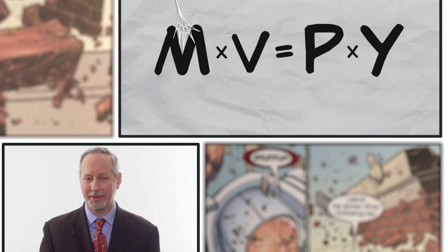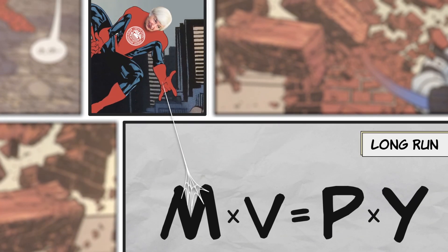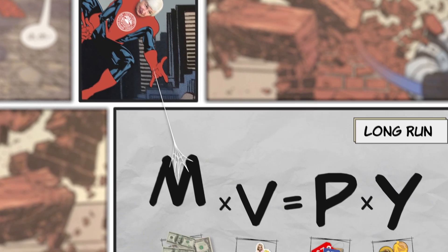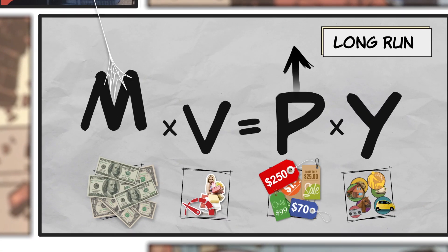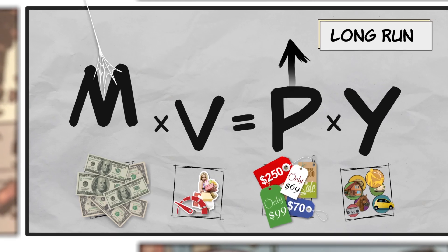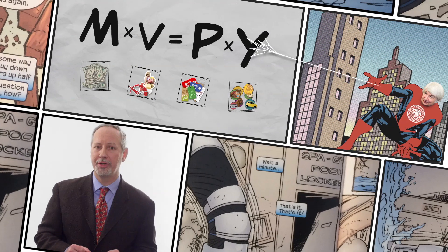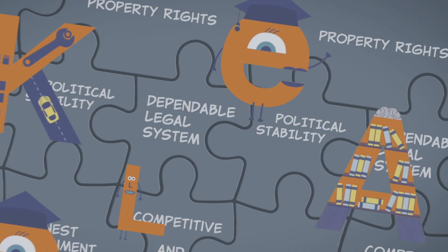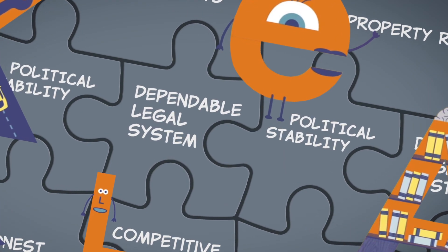How come? Well, let's go back to the quantity theory of money, which states that M times V is equal to P times Y. If M goes up, then in the long run, prices go up, and Y — real GDP — it doesn't change. Real GDP is determined by the fundamental factors of growth: human and physical capital, and good institutions.